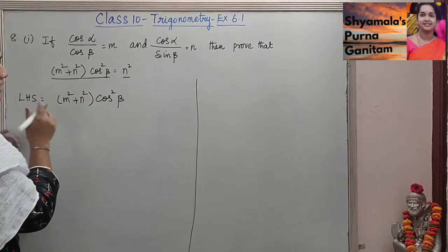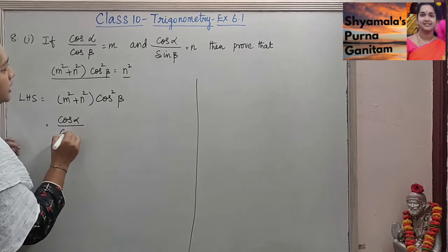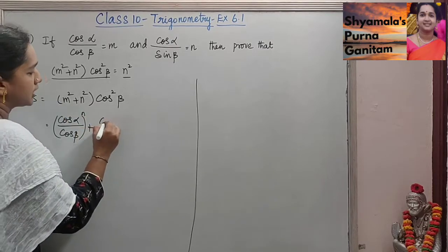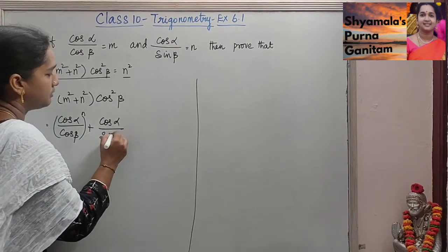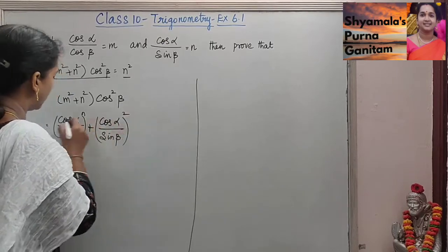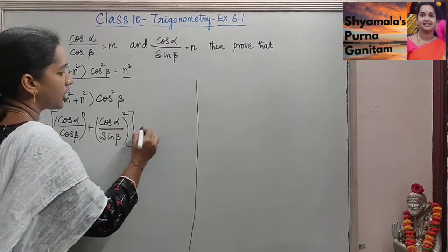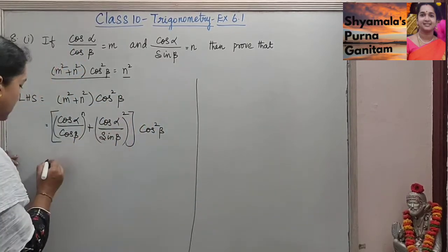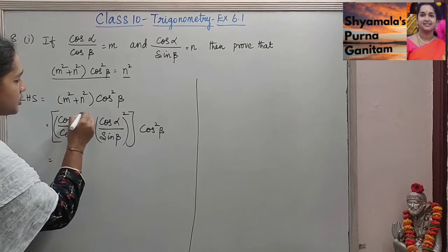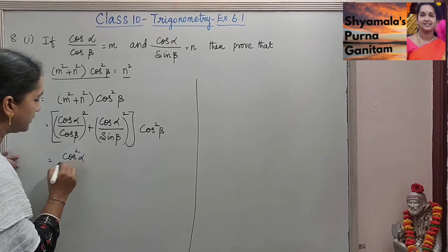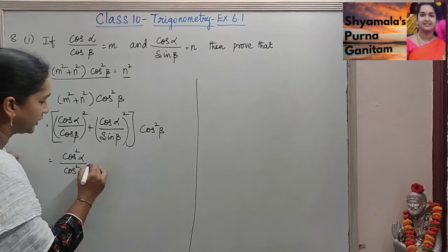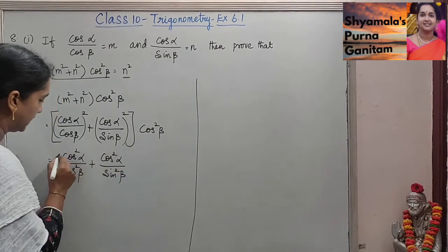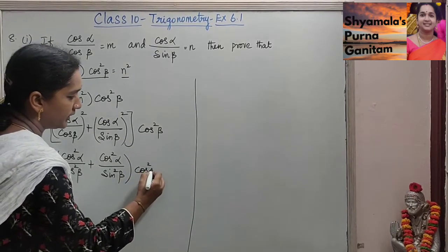The m and n values are given, so we will substitute them. So, cos α by cos β whole squared, plus cos α by sin β whole squared, into cos squared β. Expanding: cos squared α by cos squared β plus cos squared α by sin squared β into cos squared β.